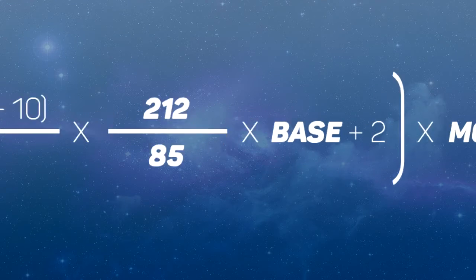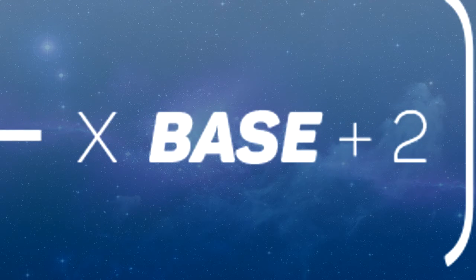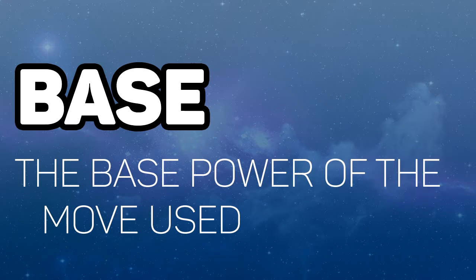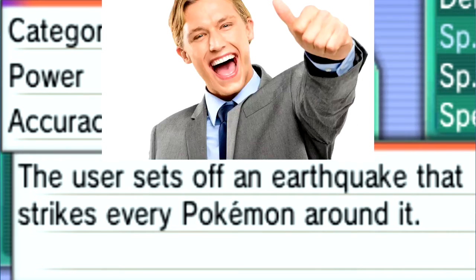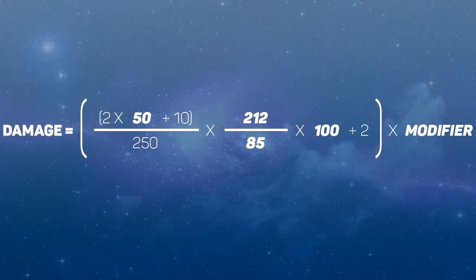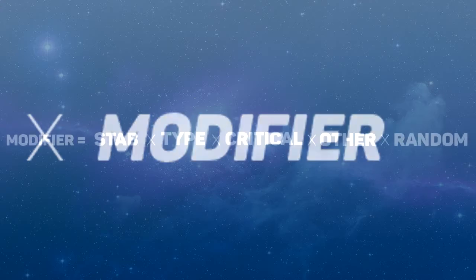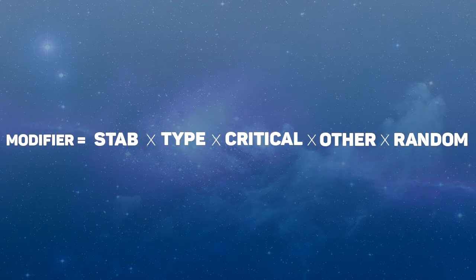Next is Base, and Base refers to the base power of the move used. You see this number? That's it right there. For Earthquake, it's base 100, because round numbers are great. Now we get to the fun stuff. Modifier refers to quite a few variables, so let's break it down.